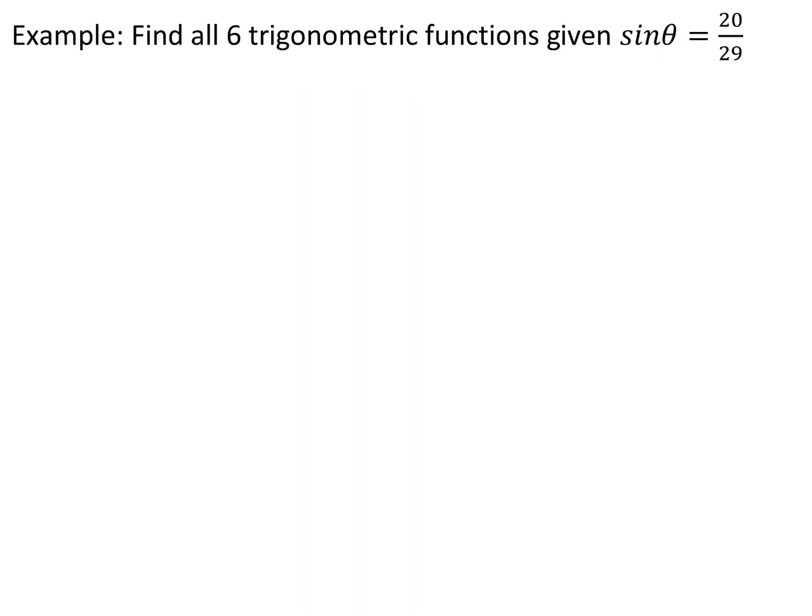Here's an example of a question that you may get. Find all six trigonometric functions given that sine theta is 20 over 29. So sine theta is 20 over 29. What I'm really being told is that the opposite of theta is the length of 20, and the hypotenuse is the length of 29.